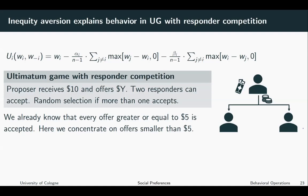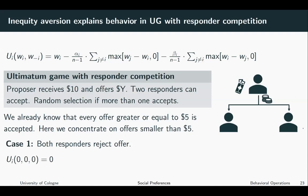We will analyze this model applying the Fehr-Schmidt inequity aversion model. As we've already seen in the standard ultimatum game, each responder wants to accept every offer greater than or equal to $5, which is just half of the pie. Here we concentrate on offers smaller than $5, and more precisely, we want to see if the proposer is able to make the responders accept very low offers.